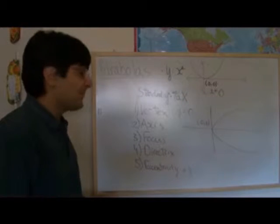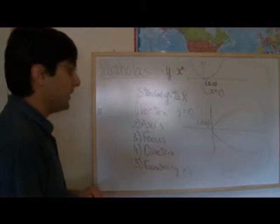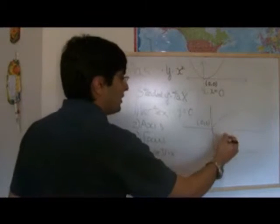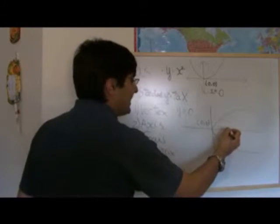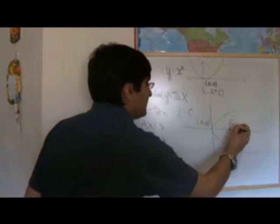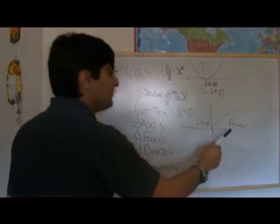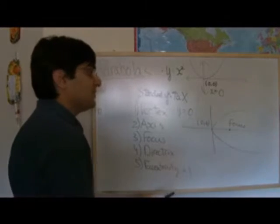What's the third feature I look for? The third feature is the focus. The focus is a point in the interior of the parabola, within the u-shape of the parabola, that lies on the axis. I'll just label that here. The focus is a fixed point on the axis that is a fixed distance from the vertex.